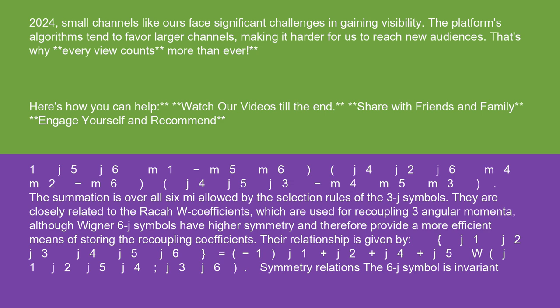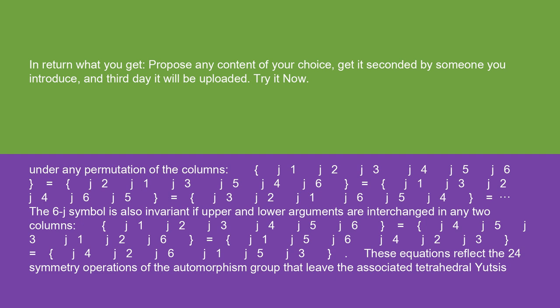Symmetry relations: The 6J symbol is invariant under any permutation of the columns. J1, J2, J3, J4, J5, J6 equals J2, J1, J3, J5, J4, J6, equals J3, J2, J1, J6, J5, J4.